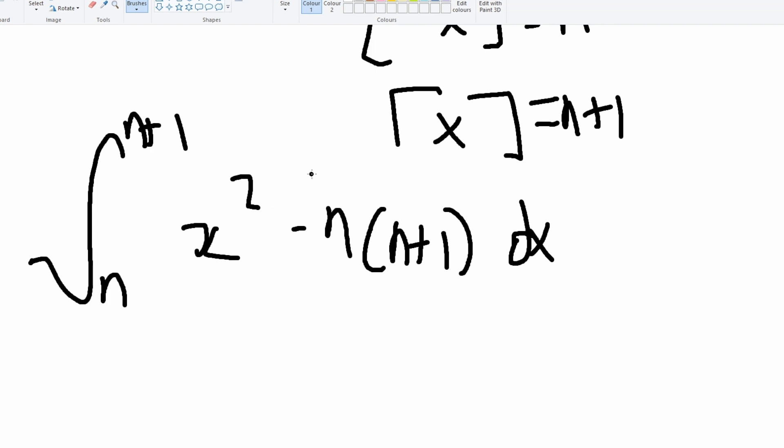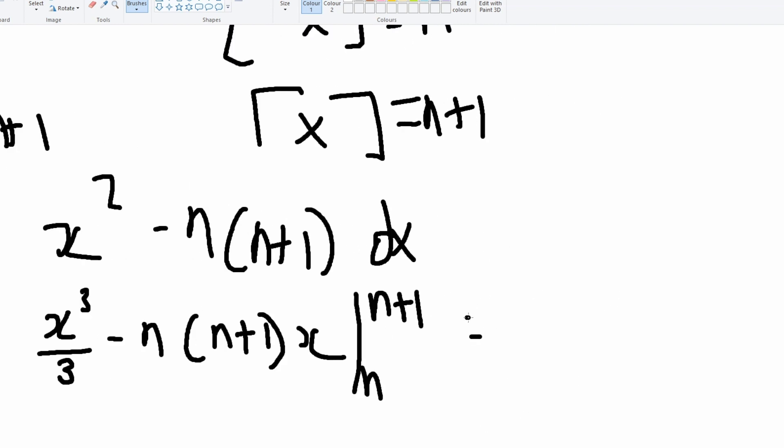Which will give us x cubed divided by three minus n times n plus one times x from n to n plus one. Substituting that in will just give us one over three.